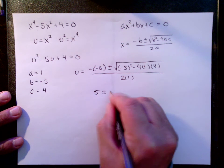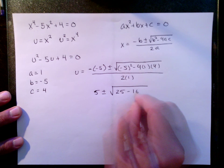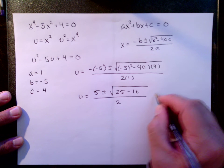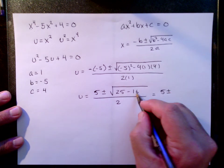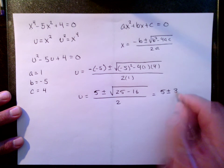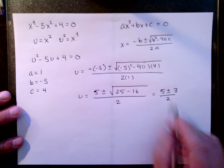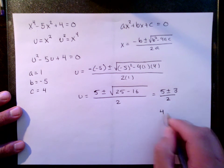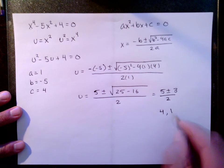Now I have some arithmetic to do. And this becomes 5 plus or minus, 25 minus 16 is 9, square root is 3 over 2. 5 plus 3 is 8 over 2, that's 4. And 5 minus 3 is 2 over 2 is 1. So we have two solutions.